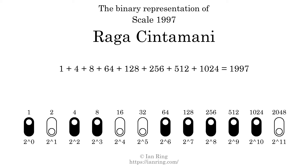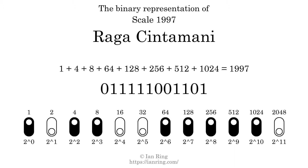The scale number not only enumerates the scale with a unique index, but it also literally describes the tonal content of the scale. Represented as a binary number in base 2, the scale number is 0, 1, 1, 1, 1, 1, 1, 0, 0, 1, 1, 0, 1, 0, 1.